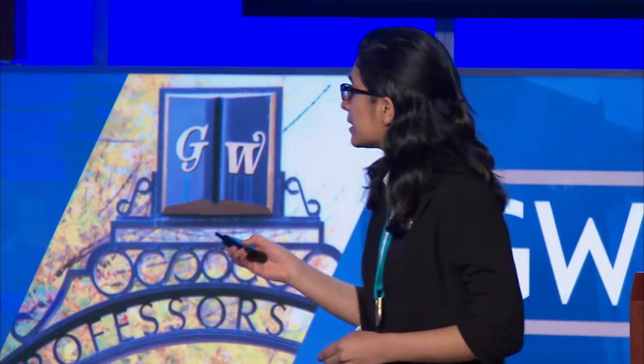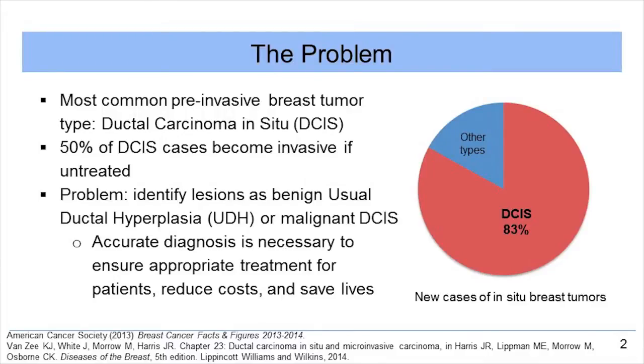Breast cancer is the single most common type of cancer. It not only accounts for about 30% of all cancers in women, but it also leads to about 458,000 deaths worldwide per year. The most common pre-invasive breast tumor type is ductal carcinoma in situ, DCIS, constituting 83% of new cases of in situ breast cancers.